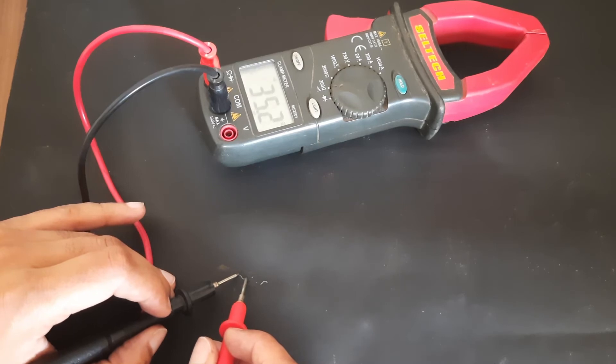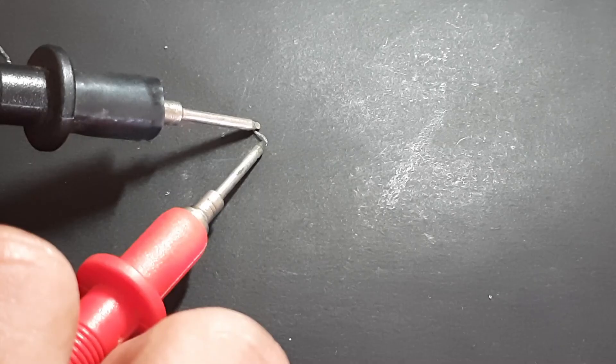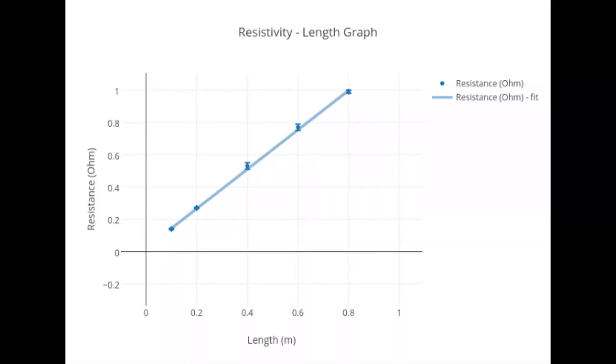And we found the resistivity of this tungsten is quite similar to the resistivity of the nichrome. Hence these both metals are good conductors.